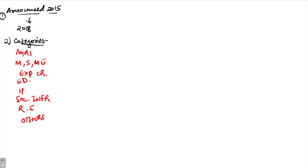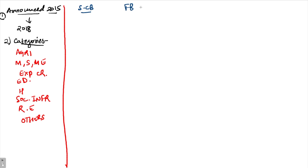Now, what are the overall targets given to banks? There are three bank classifications: (1) Scheduled Commercial Banks, (2) Foreign banks with 20 or more branches, and (3) Foreign banks with less than 20 branches in India. The total priority sector lending target is 40% of adjusted net bank credit.